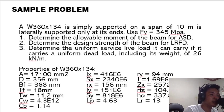CW is equals to 4.3E12. CB is equals to 1.14. IX is equals to 416E6. SX is equals to 2,340E6. RX is equals to 156 mm. IY is equals to 151E6. SY is equals to 818E6.